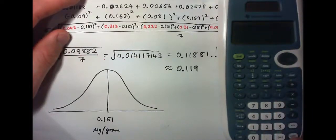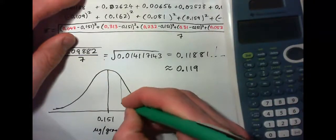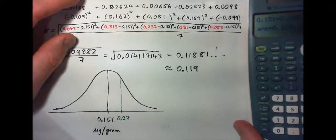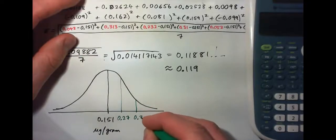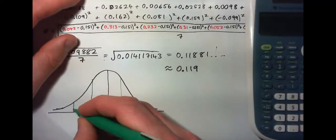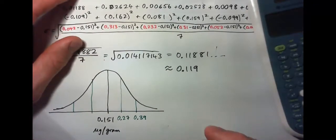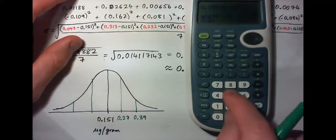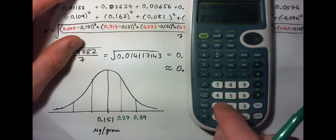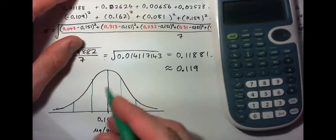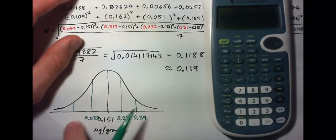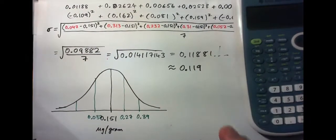So if I go 0.151, add 0.119, I get 0.27. And then if I add 0.119, I get 0.39. And then if I subtract a couple, 0.151 minus 0.119 is about there, so here's about 0.032, and if we subtract another one, we're into negatives, and you can't have negative amount of mercury. But in general, we're looking at this type of distribution for this type of fish.